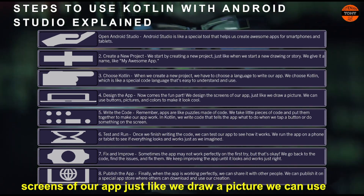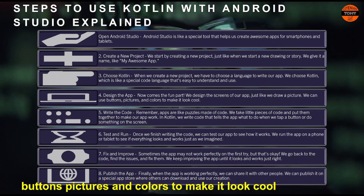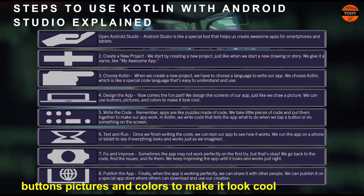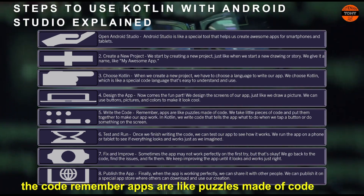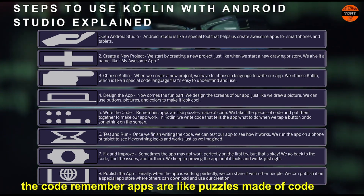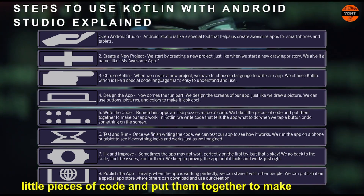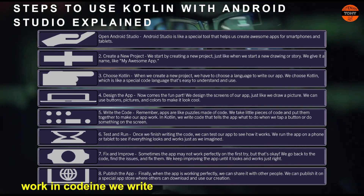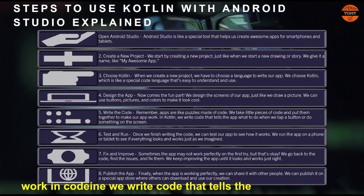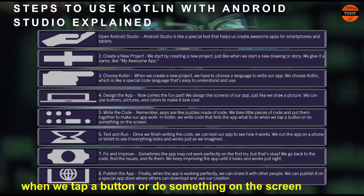We can use buttons, pictures, and colors to make it look cool. Step 5: Write the code. Remember, apps are like puzzles made of code. We take little pieces of code and put them together to make our app work. In Kotlin, we write code that tells the app what to do when we tap a button or do something on the screen.